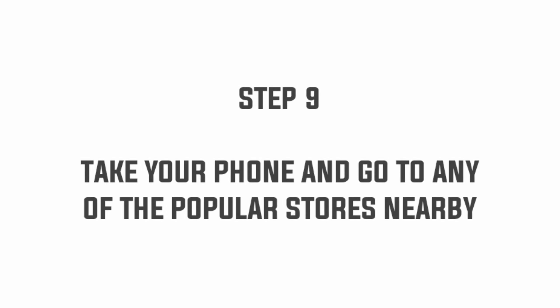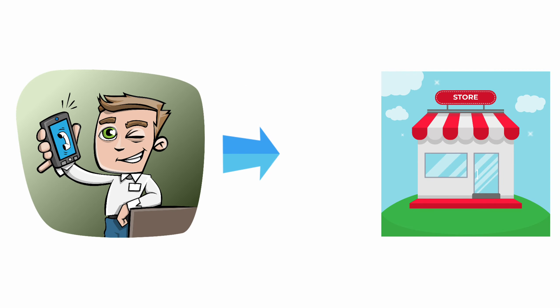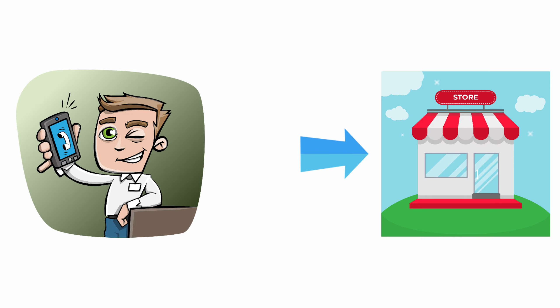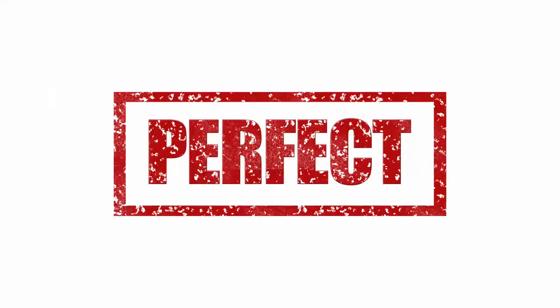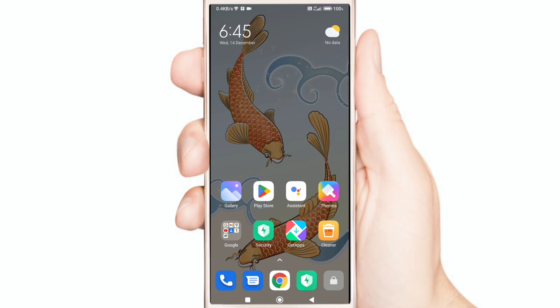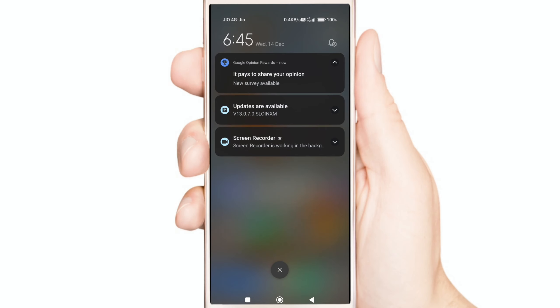Step 9: Take your phone and go to any of the popular stores nearby, because Google Opinion Rewards offers more surveys based on the location you visit. These are the perfect working methods to get more surveys. I recently received a new survey following all these steps.